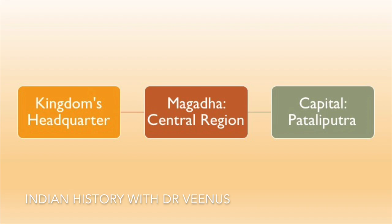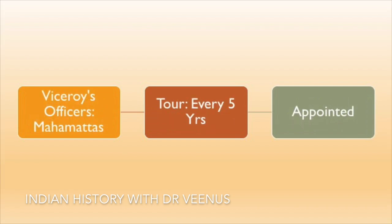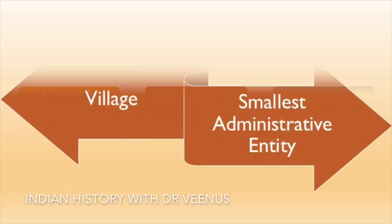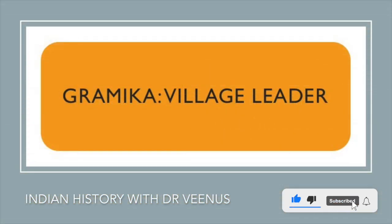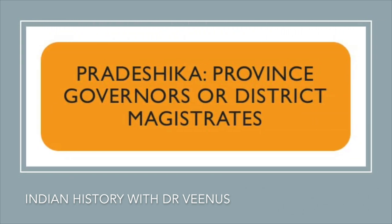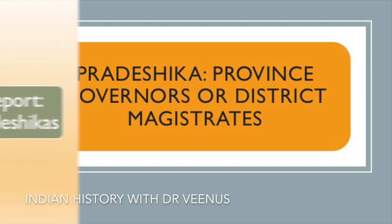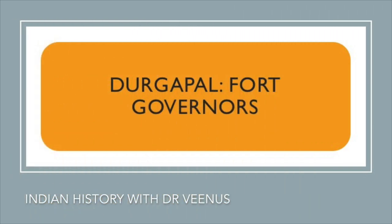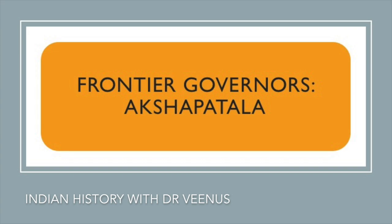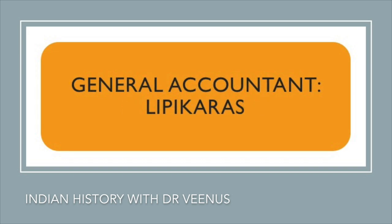The kingdom's headquarters were in Magadha's central region, with Patliputra as its capital. Some of the Viceroy's officers, such as Mahamatas, went on tour every five years. The village was the smallest administrative entity. Gramik was the head of the villages. Province governors or district magistrates were known as Pradeshiks. Tax collectors who reported to Pradeshiks were known as Thaneks. Fort governors were known as Durgpal. Frontier governors were Akshapatal and general accountants were Lipikars.